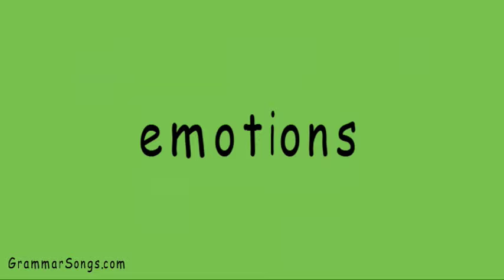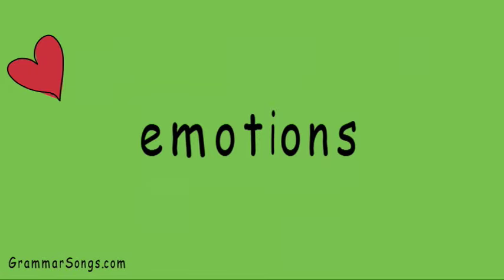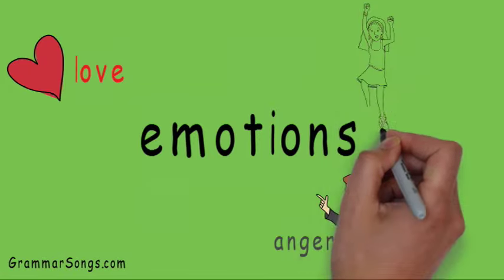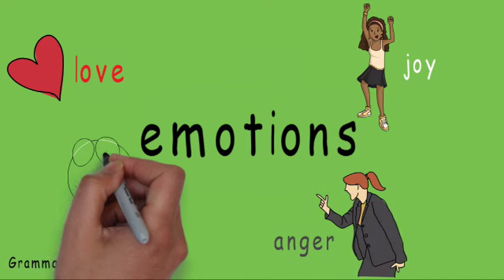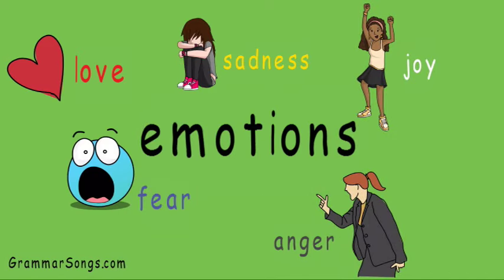Emotions can also be examples of abstract nouns. Love, anger, joy, fear, and sadness are all nouns. But you can't see, hear, smell, touch, or taste them.